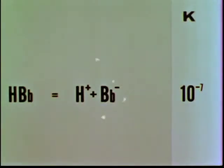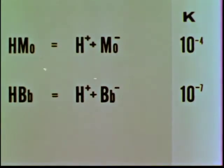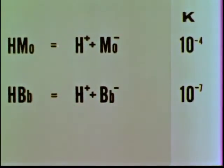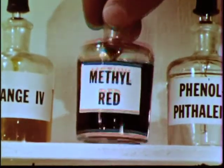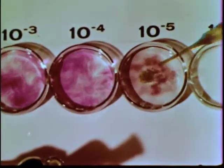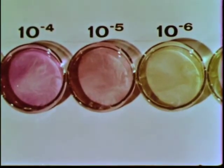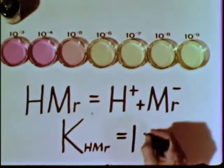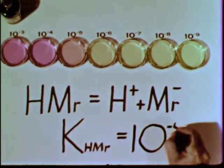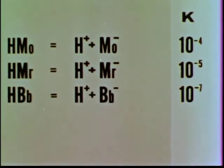We showed that the equilibrium constant of bromothymol blue is 10 to the minus 7th. Methyl orange, with an equilibrium constant of 10 to the minus 4, must be a stronger acid than bromothymol blue, and BB⁻ must be a stronger base than MO⁻. Next, let's test methyl red. The intermediate color appears at 10 to the minus 5th molar hydrogen ion concentration. Therefore, methyl red has an ionization constant of about 10 to the minus 5. Methyl red is a weaker acid than methyl orange but stronger than bromothymol blue.